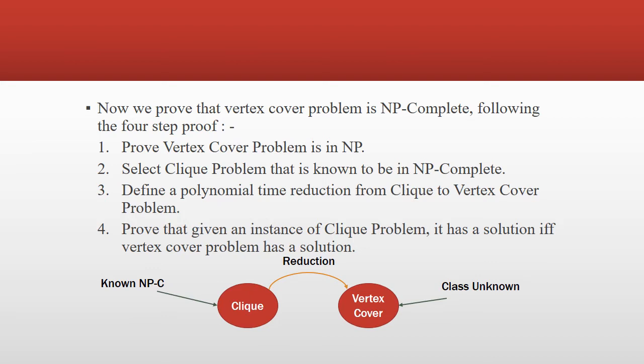We will take a known NP-complete problem — in this case, the clique problem — and reduce it by transformation to the vertex cover problem, which we have to prove is NP-complete. The output of the clique problem becomes the input of the vertex cover problem using the reduction technique.